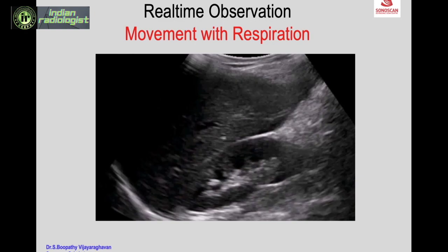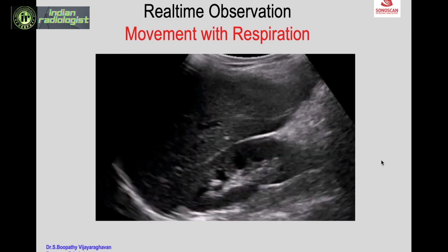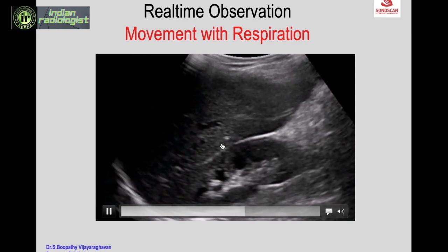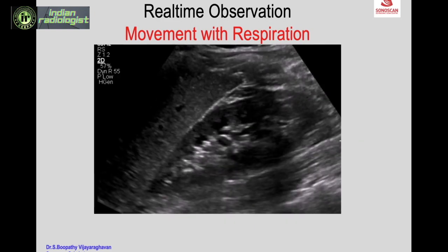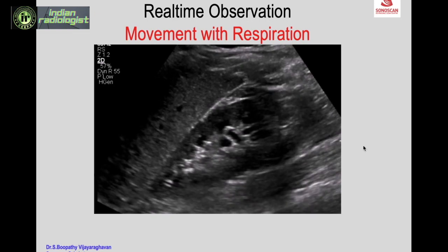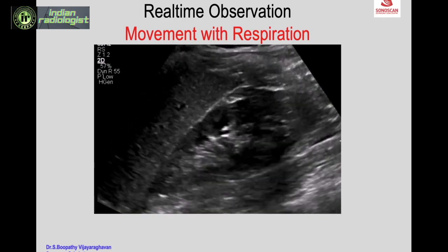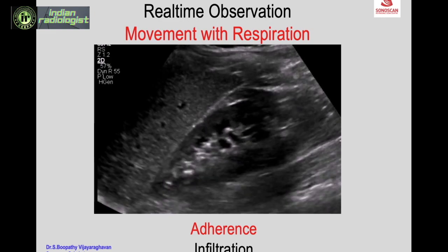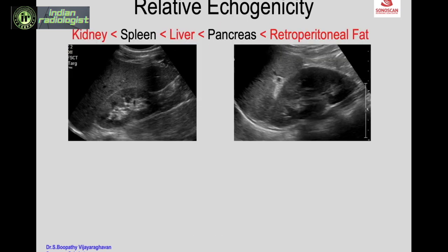In real-time observation during technique and protocol, we must observe the movement of the kidney with respiration. Even though the kidney is a retroperitoneal structure, we see it move with respiration. The liver also moves with respiration, but you will often appreciate a differential sliding movement of the liver over the kidney, brought out with a forced movement — you can see the liver slides over the right kidney. This movement will be restricted when there is inflammation and adherence of the kidney to surrounding structures by infection or infiltration.